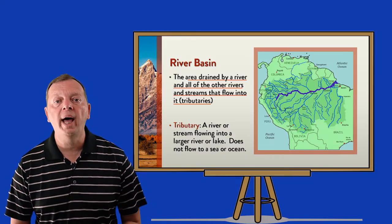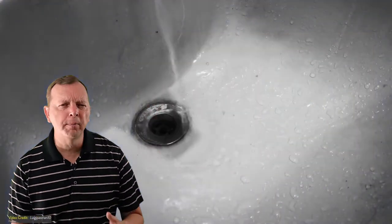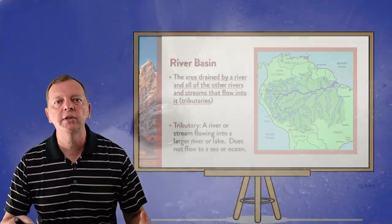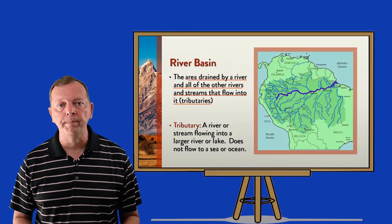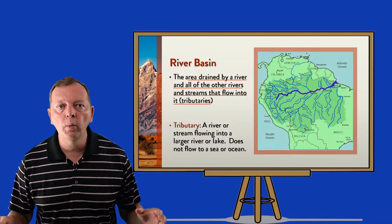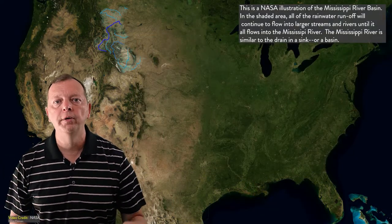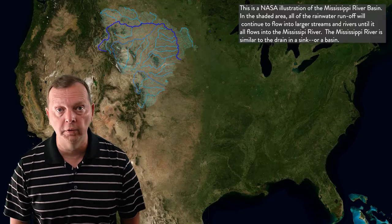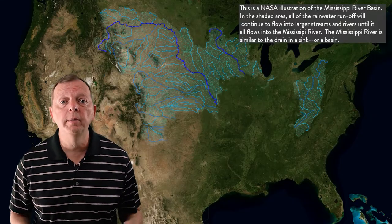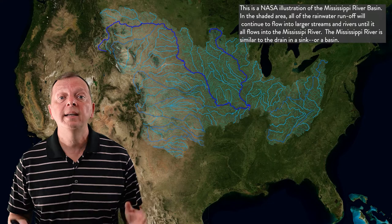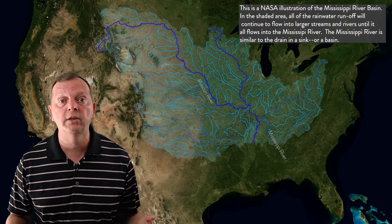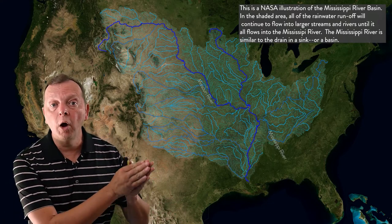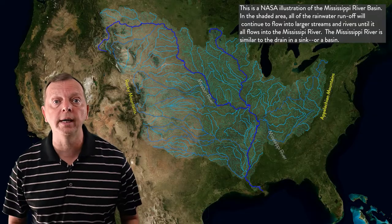Major rivers form what is known as a river basin. Think of your bathroom sink — when you turn on the faucet, all the water goes to one point to drain, and a river basin works essentially the same way. Within a river basin, all the rainwater that falls will either be absorbed into the ground or will flow into creeks, streams, and smaller rivers, and finally into the main river of the basin. The Mississippi River basin takes up most of the central United States, stretching from the Rocky Mountains in the west to the Appalachian Mountains in the east.